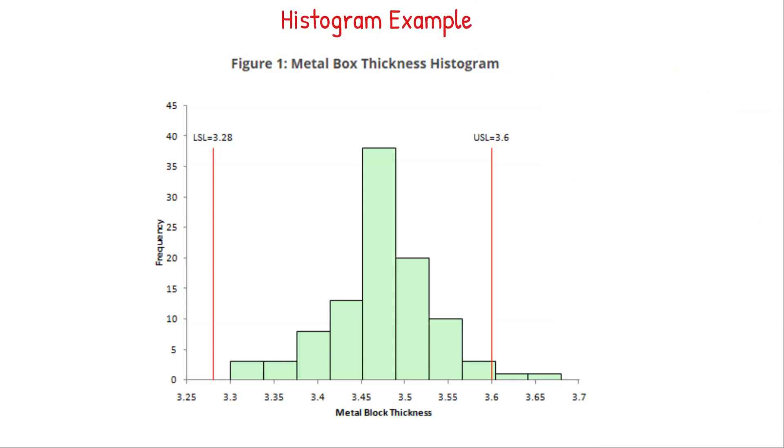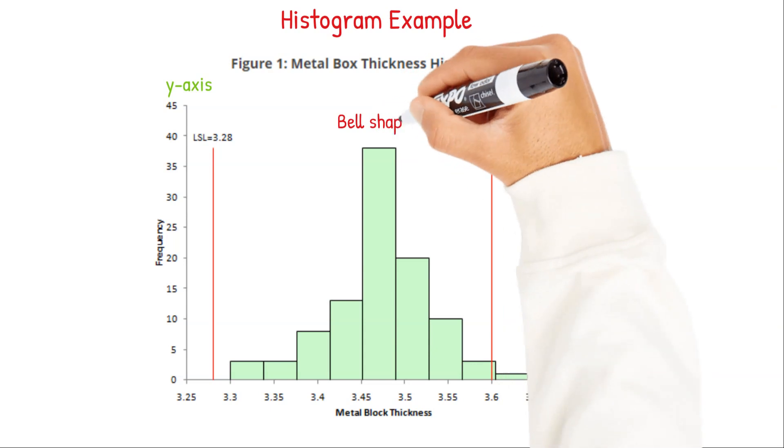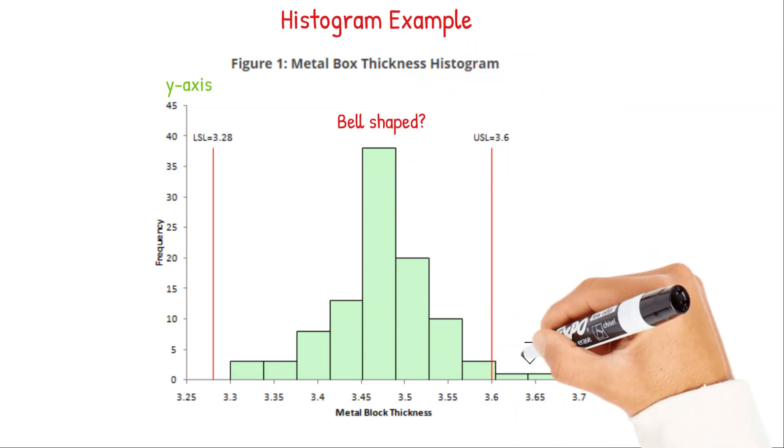Here's an example of a histogram: metal box thickness. The thickness is on the x-axis, the frequency is on the y-axis. It looks bell shaped and you can see there are some data above the specification and some things that are out of spec.